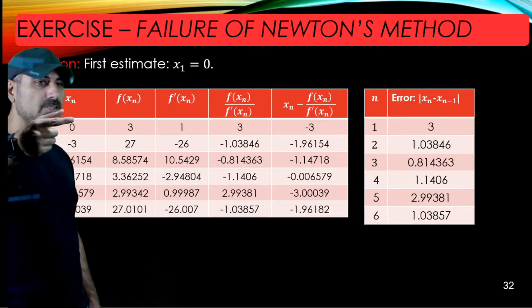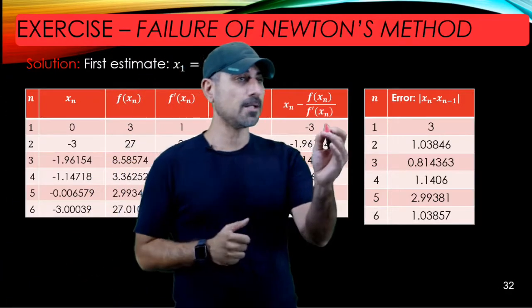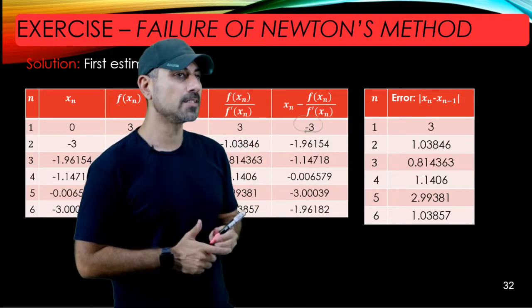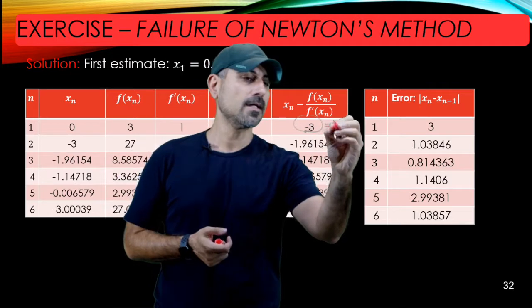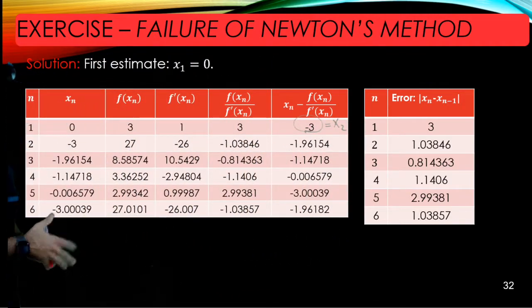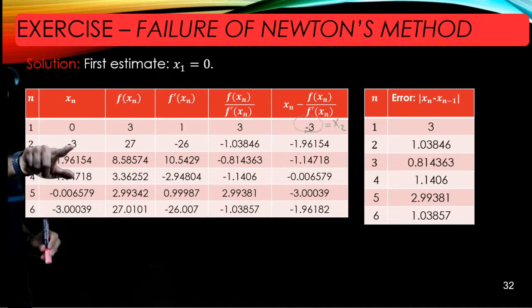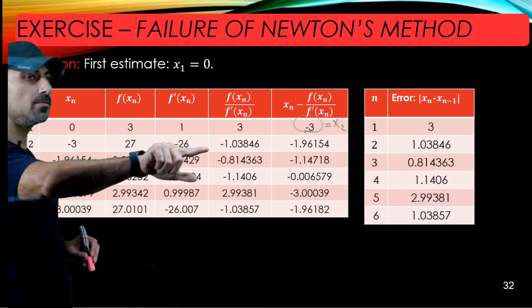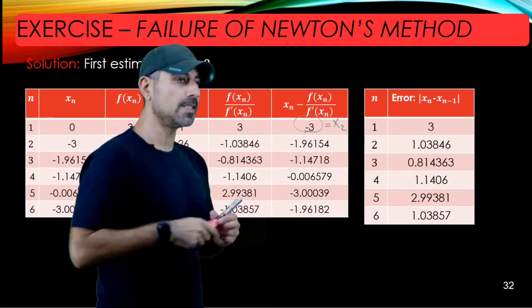Here are the iterations. We start with x₁ = 0. The number that pops here, like this number -3, is going to be x₂. Once you have x₂, you grab it and then look at f(x₂), f'(x₂), and those ratios to eventually get to somewhere here, which is hopefully your x₃.